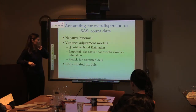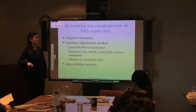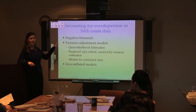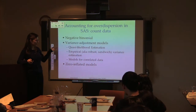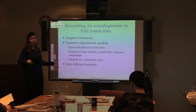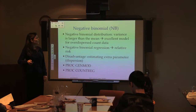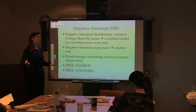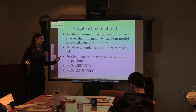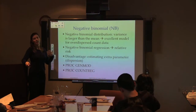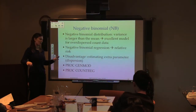You can account for over-dispersion using negative binomial regression. The negative binomial distribution is attractive because by definition the variance is larger than the mean, making it an excellent model for over-dispersed count data. It also gives a coefficient you can exponentiate to get a relative risk estimate. The disadvantage is that estimating the extra dispersion parameter may cause convergence issues in SAS. Negative binomial regression can be implemented in proc genmod and proc countreg.